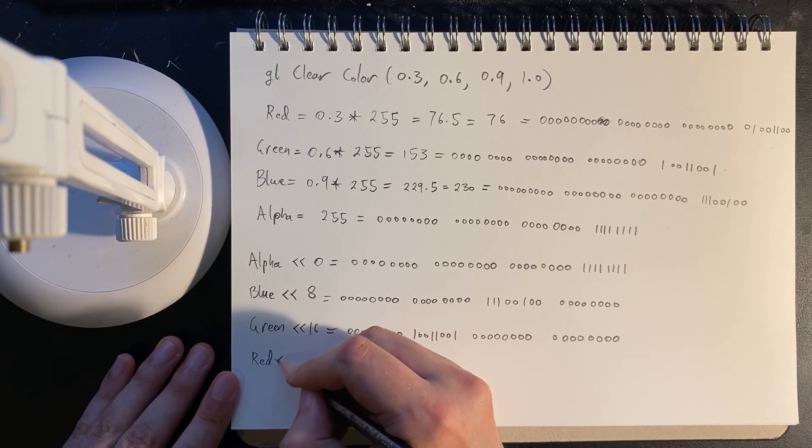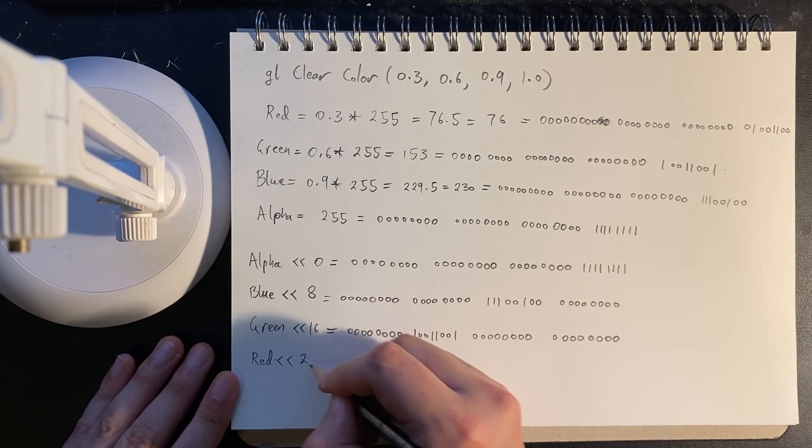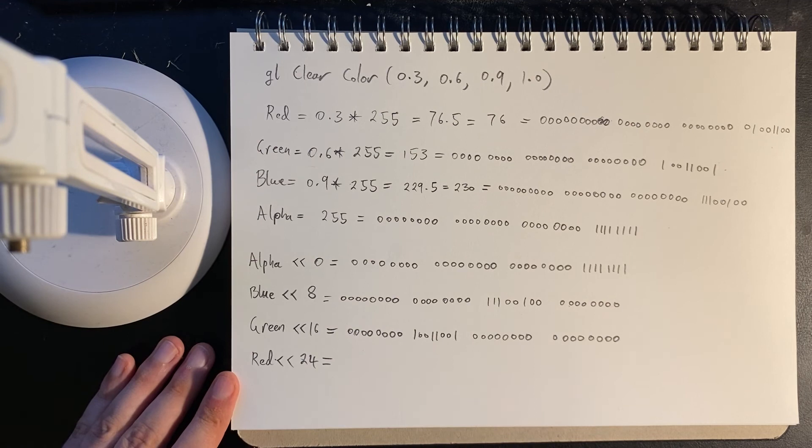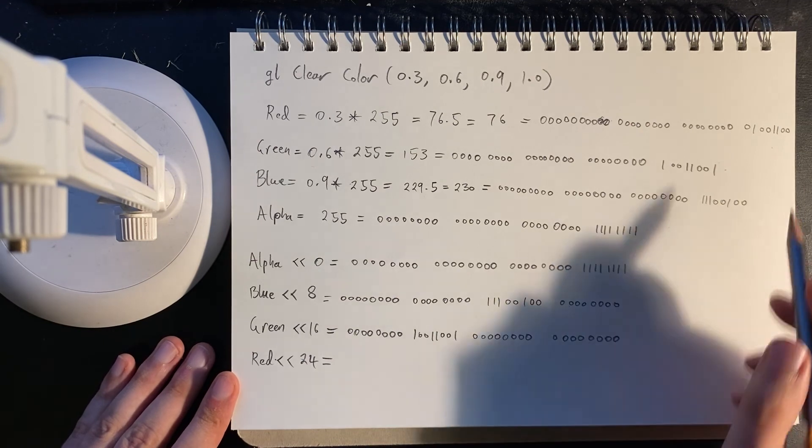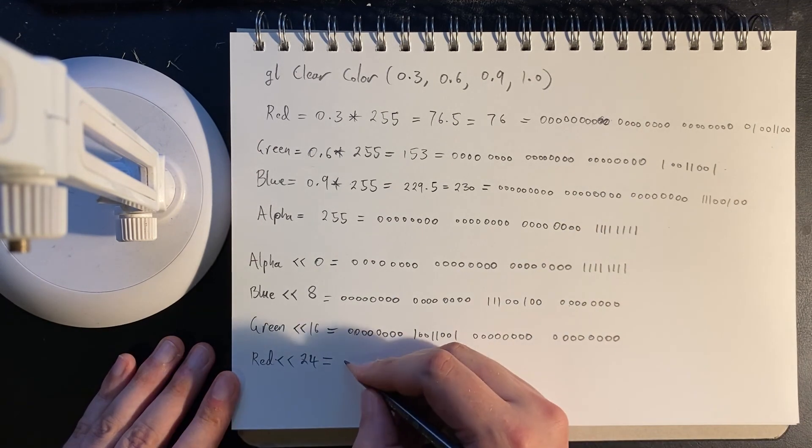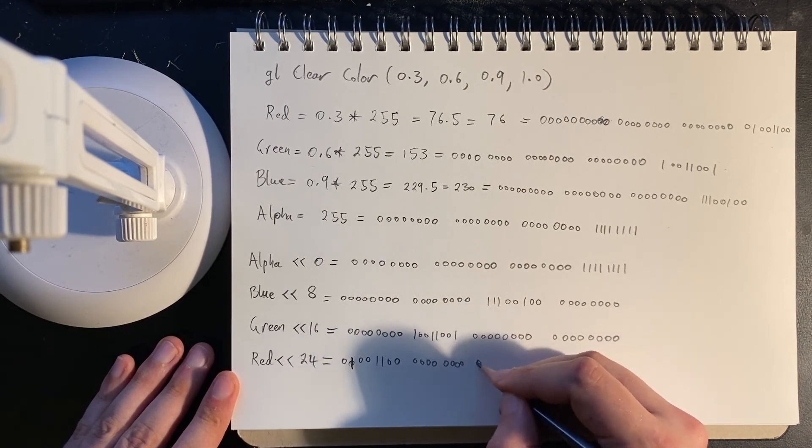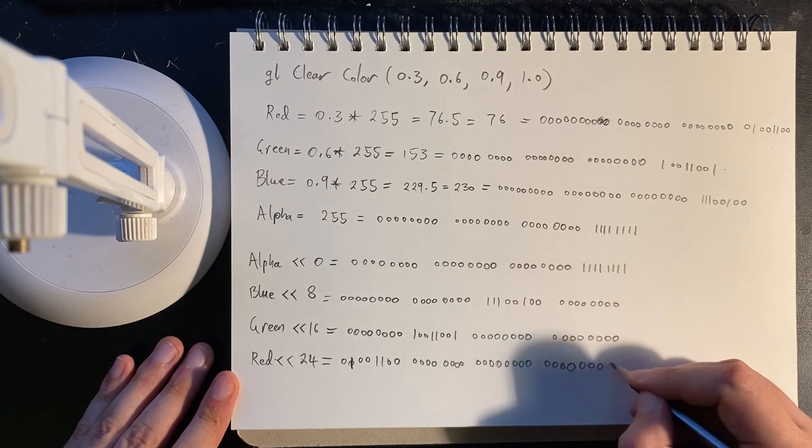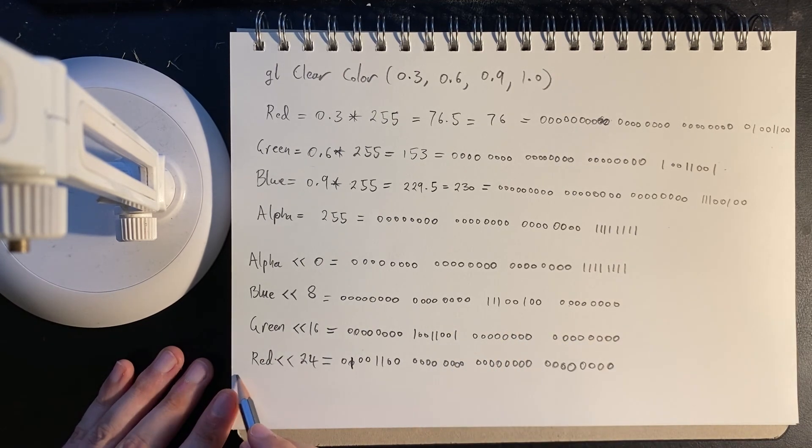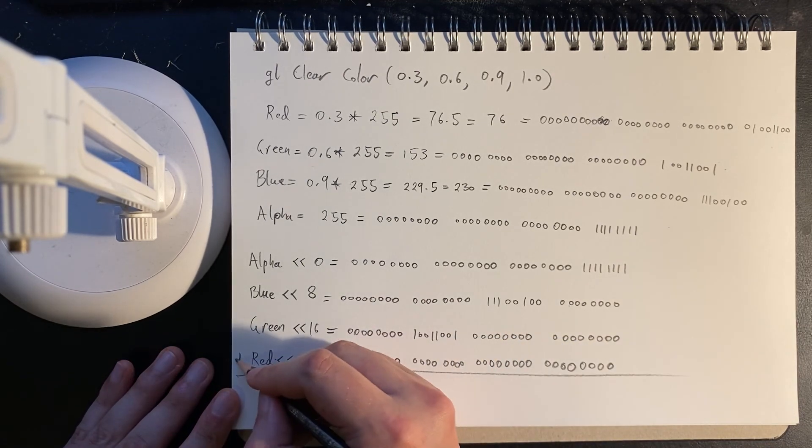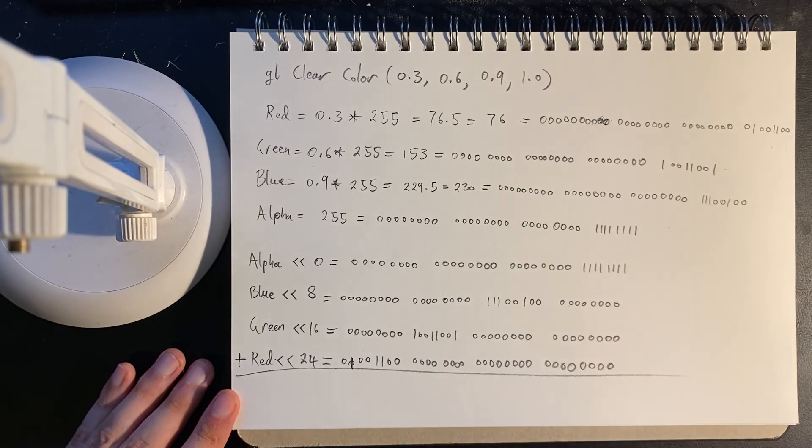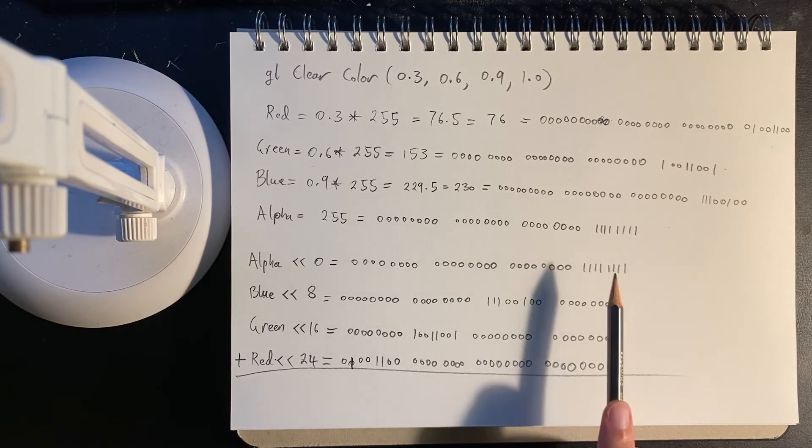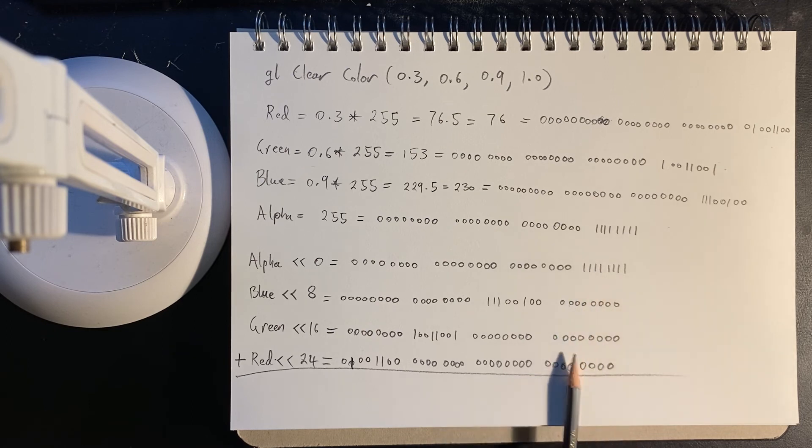And then finally, the red is shifted left by 24 bits. So that's taking this information and writing it in. So once those bit shifts have been performed, we can then sum those numbers together. And we can see that the information is in the corresponding spot.